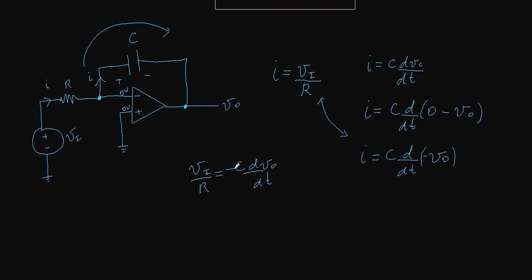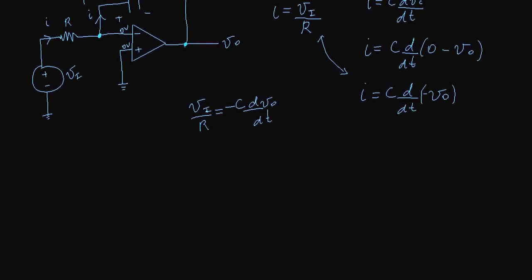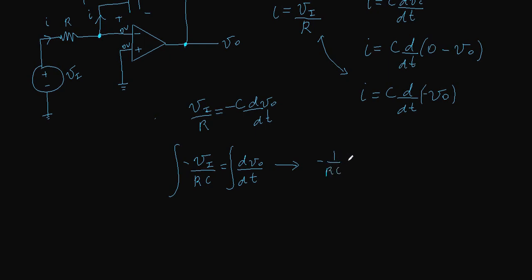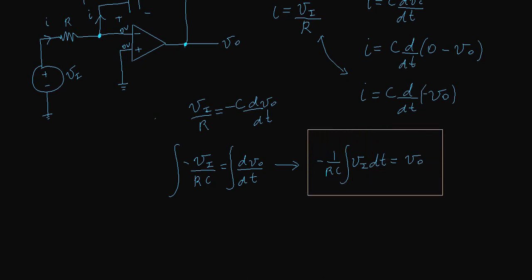Dividing both sides by minus C gives minus VI over RC equals dV_out/dt. Integrating both sides with respect to time, we get V_out equals minus one over RC times the integral of VI dt. This is our op-amp integrator.